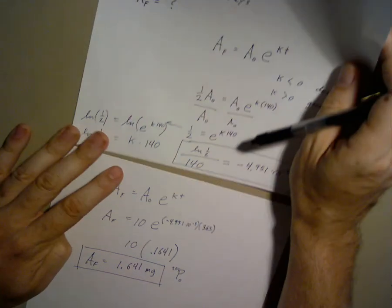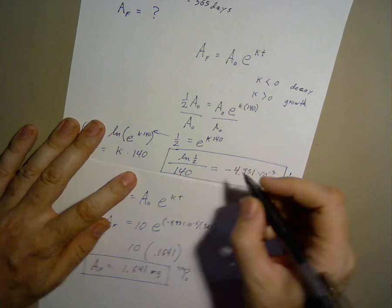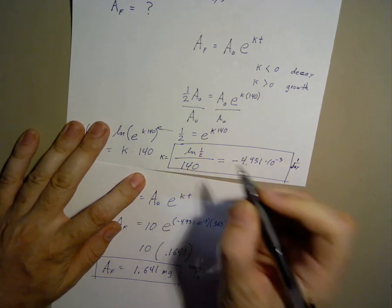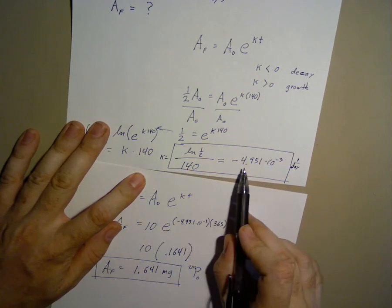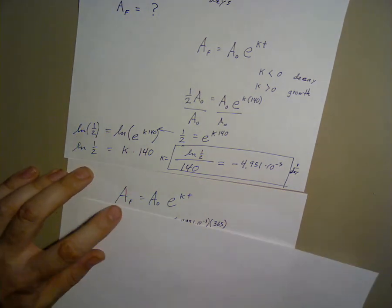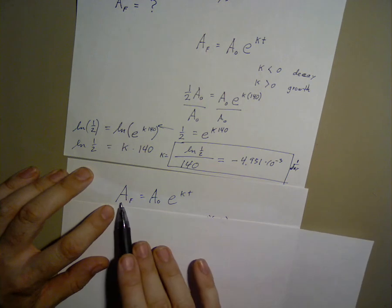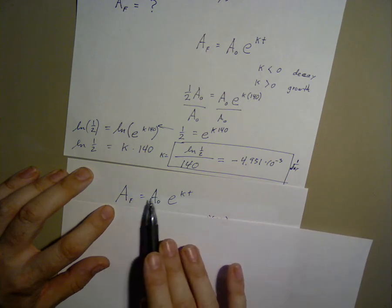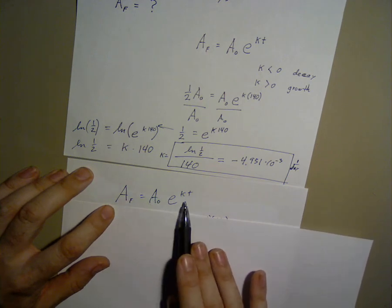So now that we know what k is, we can take our original change formula: a-final equals a-initial, the original amount, times e to the power of kt.